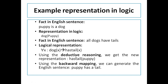If we apply deductive reasoning, we get the new representation: puppy has a tail. If we apply backward mapping, we generate the English sentence equivalent: 'puppy has a tail.' This gives the result of the backward mapping.